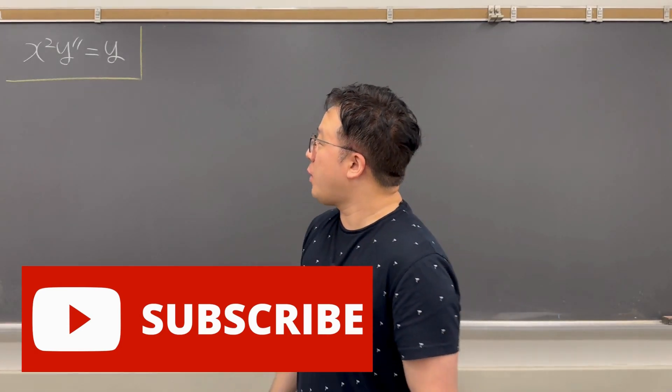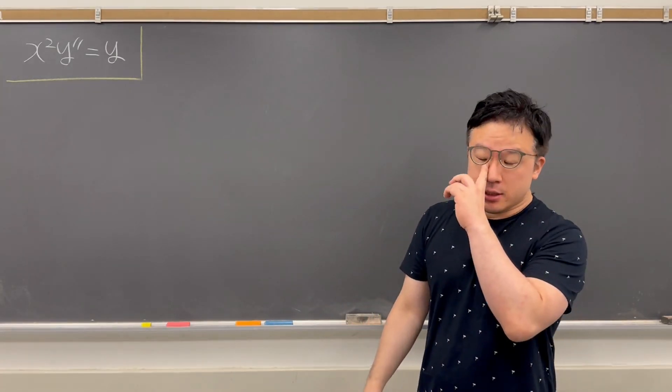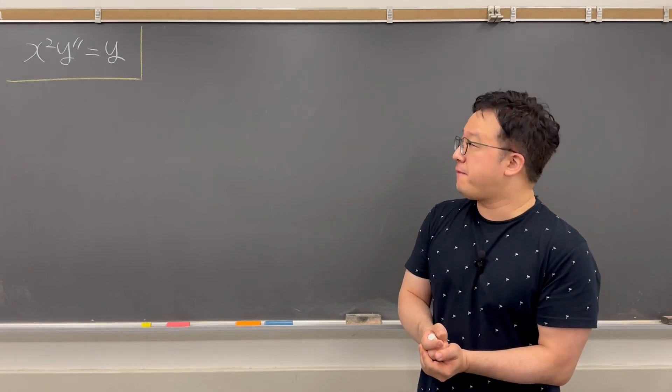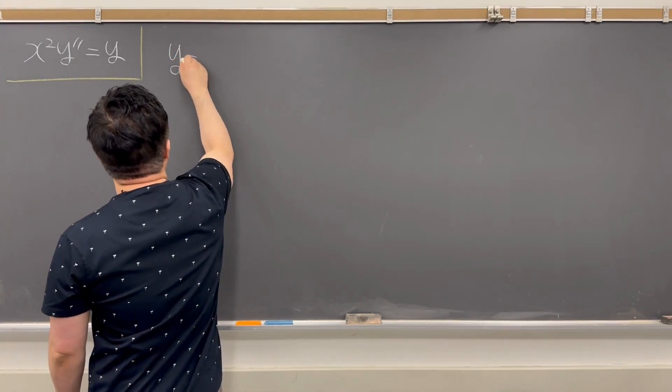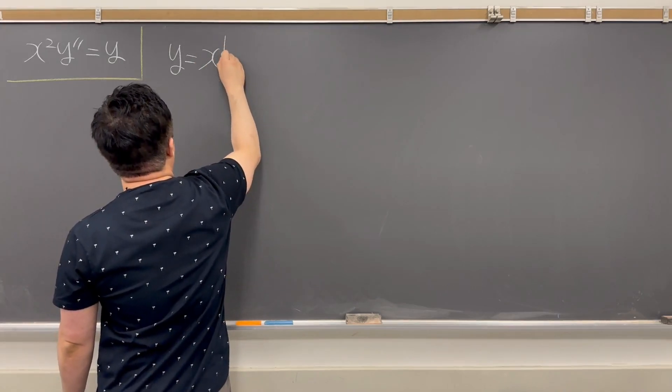So we have x squared y double prime is equal to y, right? So for this, since this is the second-order linear differential equation, you're looking for y is equal to x to the power of p.